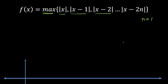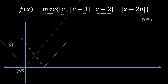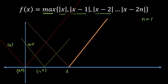So let's start with the x and y-axis. Mod of x is obviously going to pass through (0, 0), as you can see. This is our function mod of x. Similarly, the next function is mod of x minus 1. The next function is mod of x minus 2, and this will pass through (2, 0). The red one is mod of x.